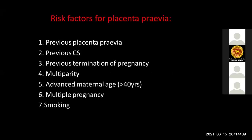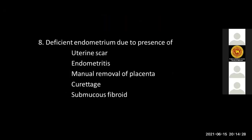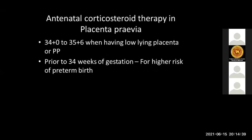Risk factors for placenta previa include previous placenta previa, previous cesarean sections, previous termination of pregnancy, multiparity, advanced maternal age, multiple pregnancy, smoking, and deficient endometrium due to uterine scars, endometritis, and previous suction curettage. When placenta previa is diagnosed, it is always better to be prepared for antepartum hemorrhage.